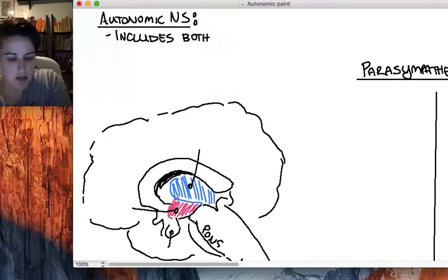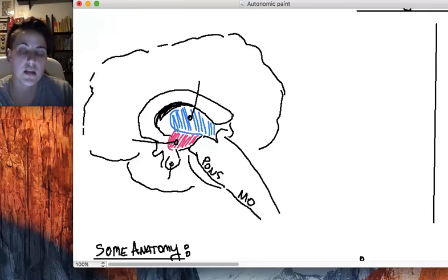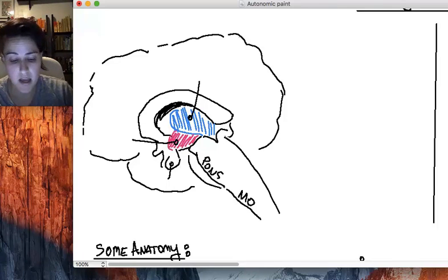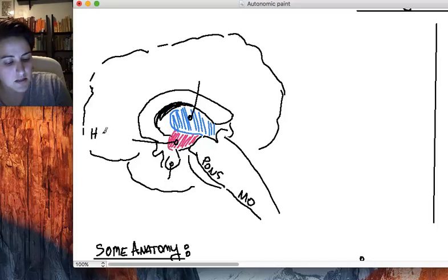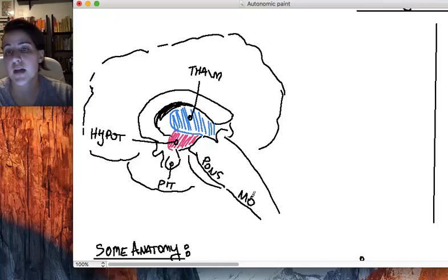Let's look at some anatomy or players in the central nervous system. Remember that autonomic nervous system includes both visceral sensory and visceral motor neurons. This is a mid-sagittal section of the brain. Some main players are the hypothalamus in pink, the thalamus in blue, the pituitary gland, the pons, and the medulla and brain stem. The main purpose is to maintain fluid balance and ultimately homeostasis through the autonomic nervous system and visceral motor response.